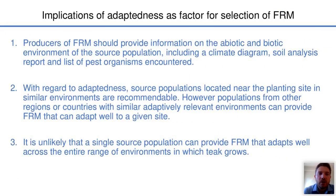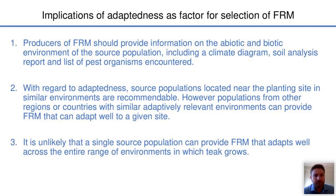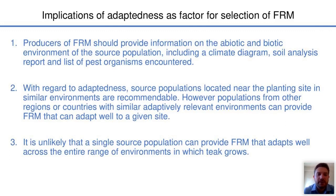What are the implications of adaptedness as a factor for selection of forest reproductive material? Producers of reproductive material should provide information on the abiotic and biotic environment of the source population, including a climate diagram, soil analysis report, and list of pest organisms encountered. With regard to adaptedness, source populations located near the planting site in similar environments are recommendable. However, populations from other regions or countries with similar adaptively relevant environments can also provide material that adapts well to a given site. It is unlikely, however, that a single source population can provide forest reproductive material that adapts well across the entire range of environments in which teak exists.